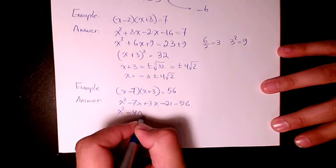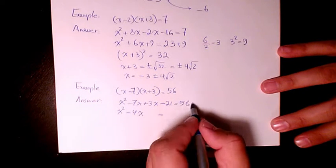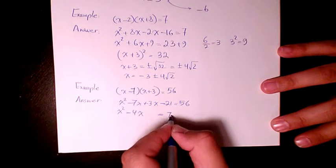So x squared minus 4x equals to 56 plus 21, which is going to be 77.